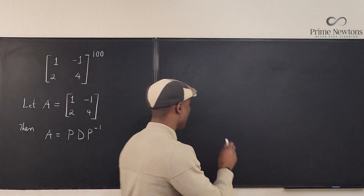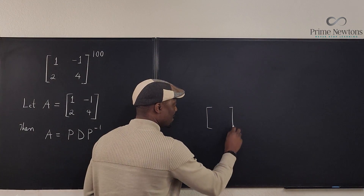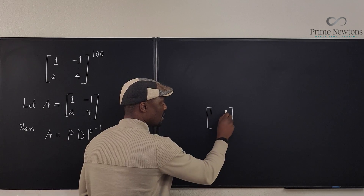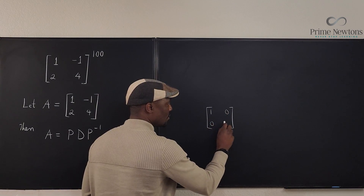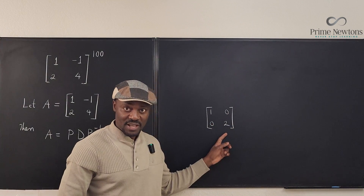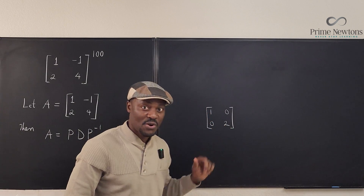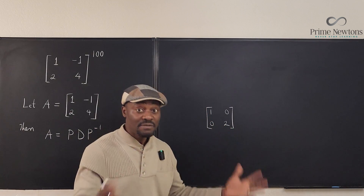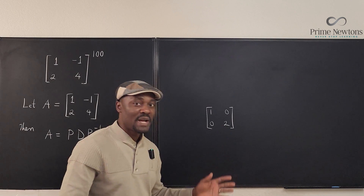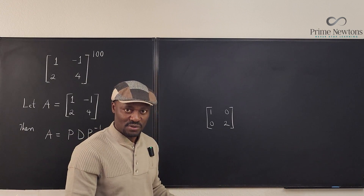For example, if I write a matrix [1, 0; 0, 2], this is a diagonal matrix because on the main diagonal you have the non-zero entries and everywhere else you get zero. Whether it's a 2×2 or 3×3, I'm using a simplified version.